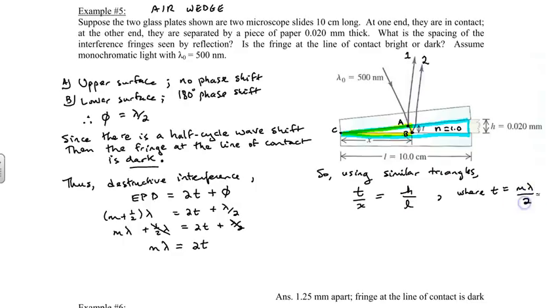Now we have m lambda over 2x equals h over l. We'll rewrite this equation for x: x equals m lambda l over 2h. If we substitute our values in, let's leave m as it is and the wavelength is given as 500 nanometers.